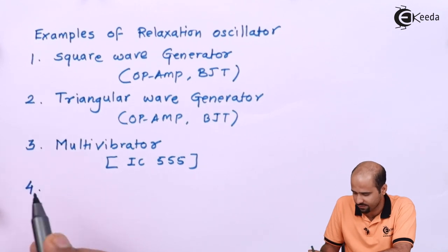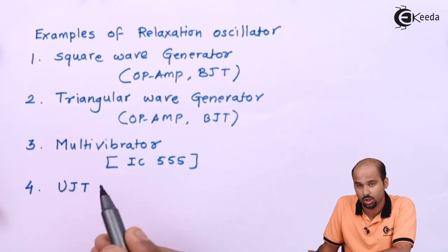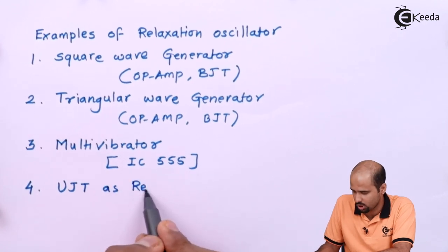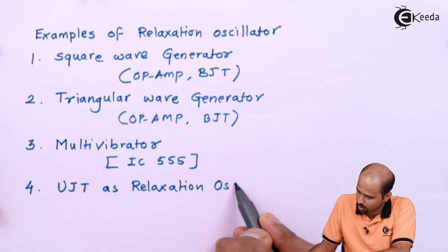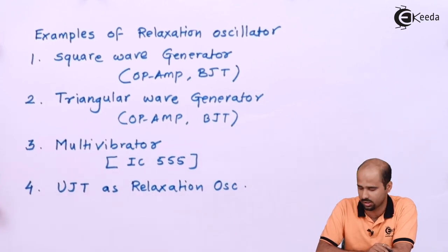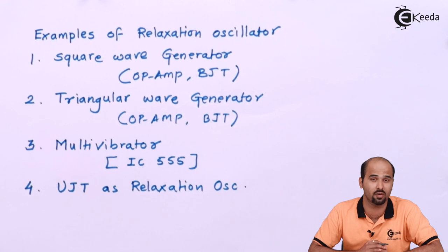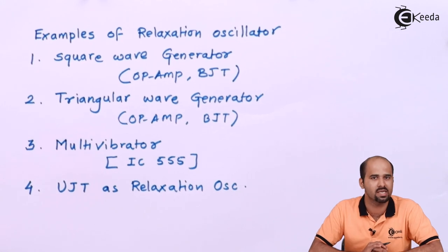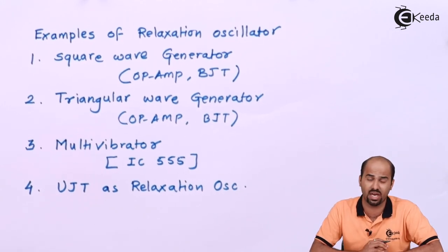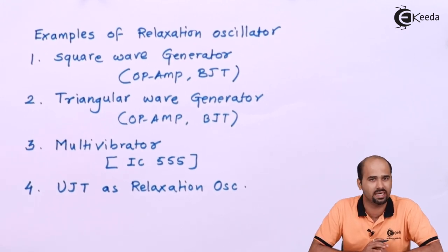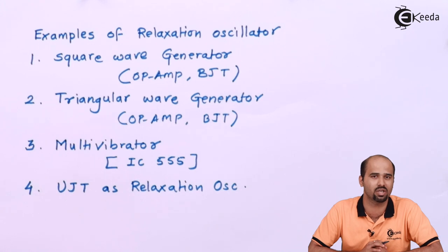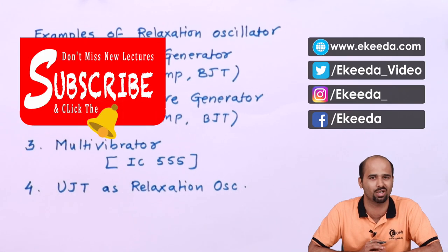One more relaxation oscillator is the UJT — unijunction transistor — as a relaxation oscillator. This transistor can be used to generate a continuous waveform at a particular frequency up to time T tending to infinity. This covers the classification of oscillators on different bases. We will learn each oscillator type in detail in separate videos, so stay tuned. Thank you for watching. If you have any doubts, please comment on this video.